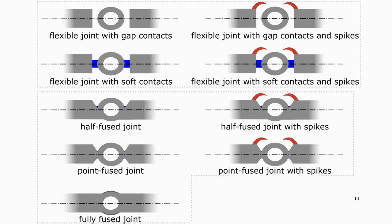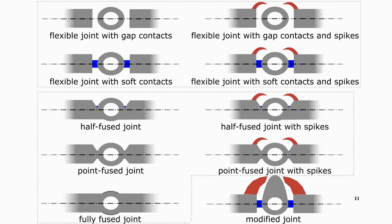Then, half fused joints, half fused joint with spikes, point fused joint, point fused joint with spikes, and fully fused joints, which all belong to the category of fused joints. A modified joint was also developed to enhance the load bearing capacity of our bio-inspired flexible joints. This was done by enlarging the spikes on the flexible joint with soft contacts and spikes.